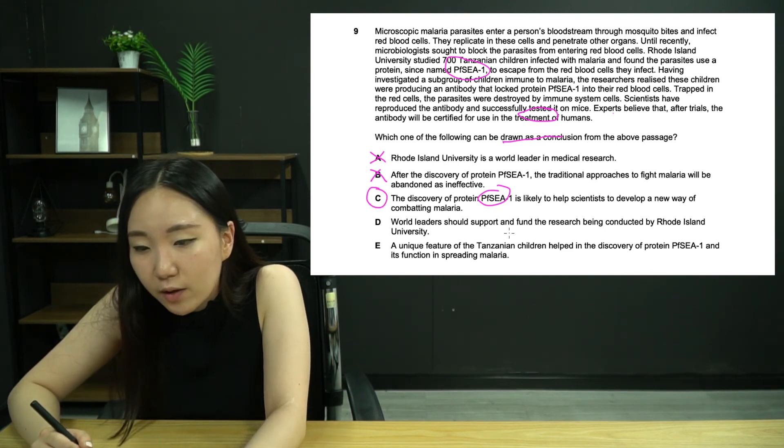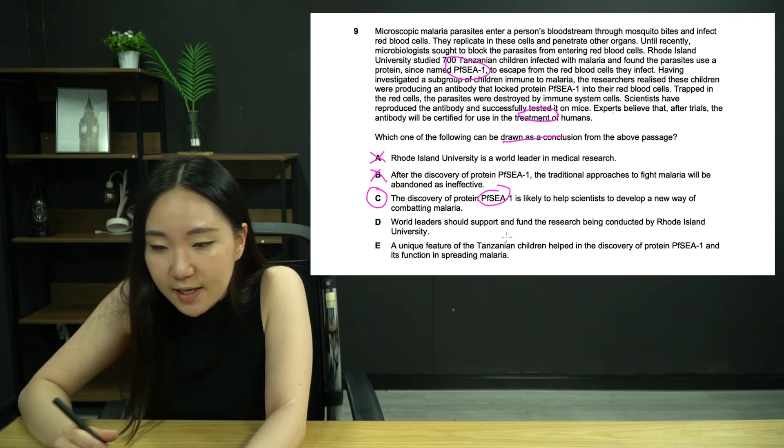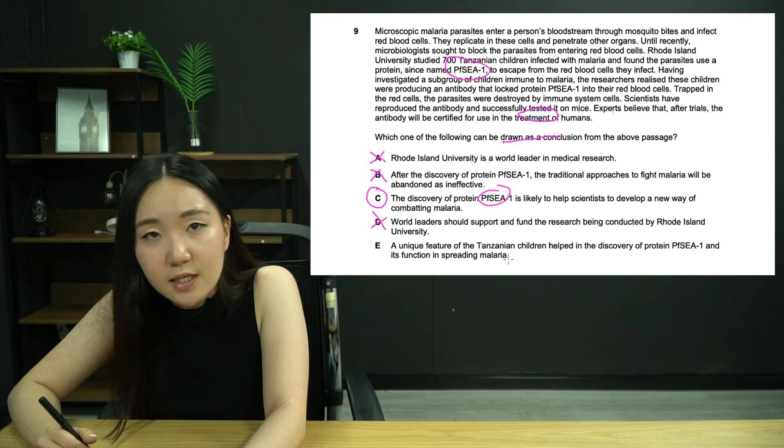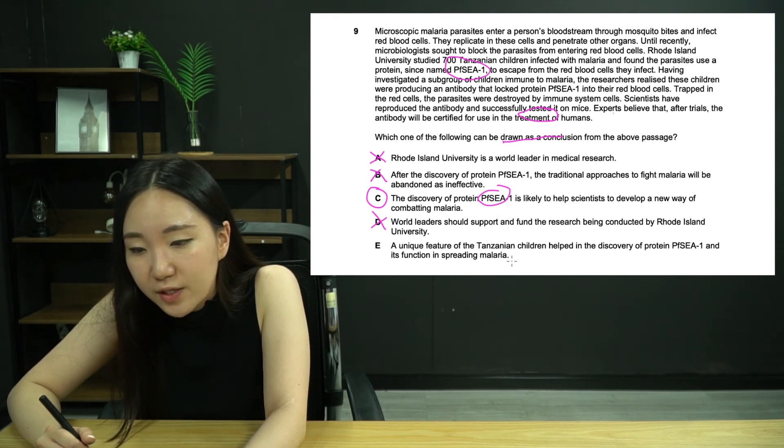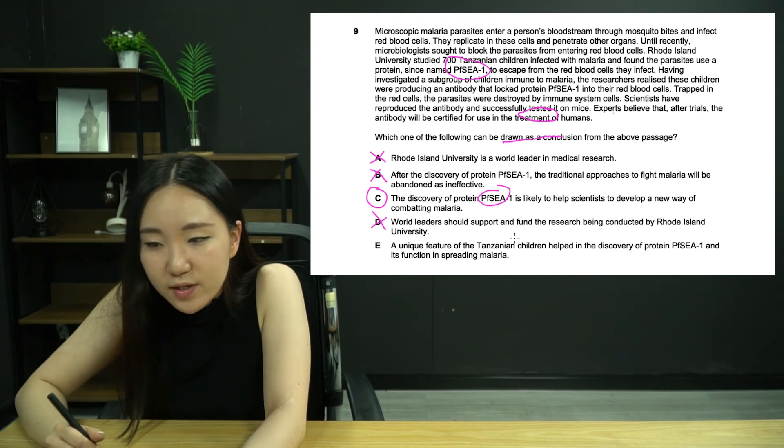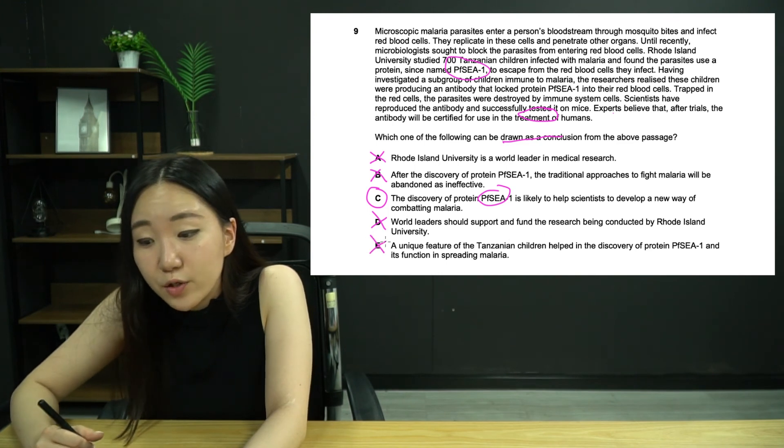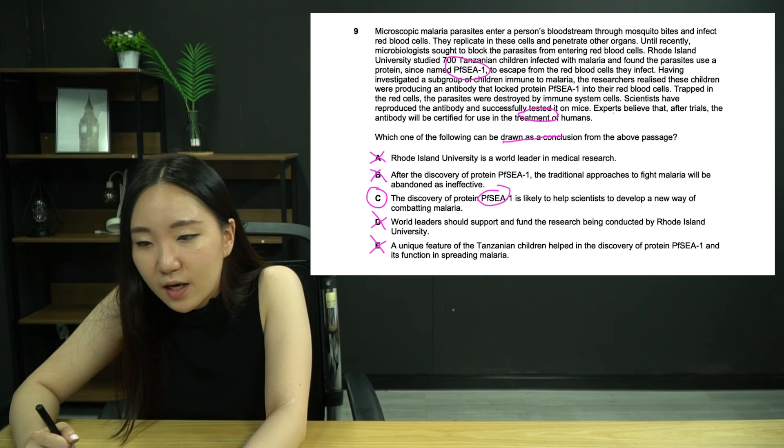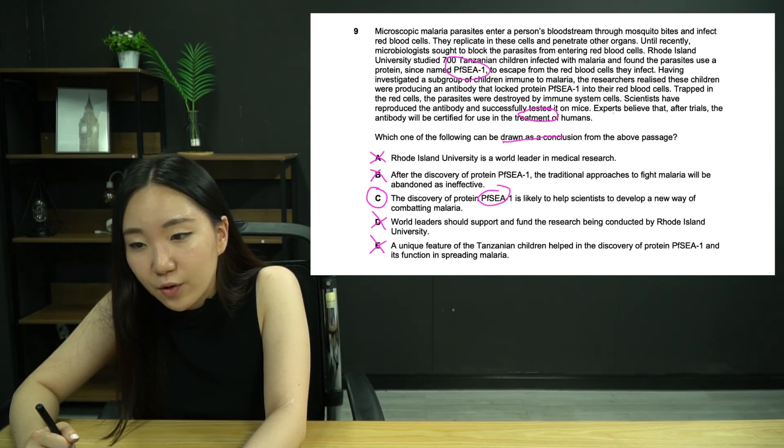Rhode Island University is a world leader in medical research - no possible way we could prove that. Discovery of this protein is going to help scientists to develop a new way of combating malaria. Yeah, potentially, that's correct actually. We have found this protein. By looking at this, we can now see there's the way we had before, stopping the parasite from getting in, but now we're going to just lock it in and we can use it in the treatment of humans. So confidently C.